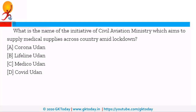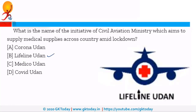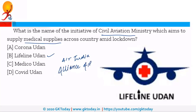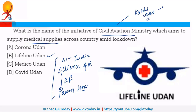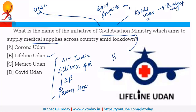What is the name of the Civil Aviation Ministry initiative that aims to supply medical supplies across the country? The name is Lifeline Udan — an initiative of the Ministry of Civil Aviation to supply medical supplies during the lockdown period. The air carriers involved are Air India, Alliance Air, Indian Air Force, and Pawan Hans. The Ministry of Civil Aviation is also the implementing authority of the Krishi Udan scheme, announced during the recent budget for transporting agricultural products, as well as the UDAN scheme — Ude Desh ka Aam Nagrik.